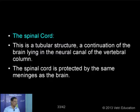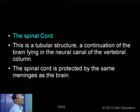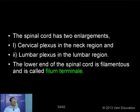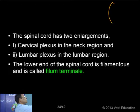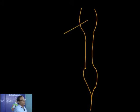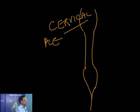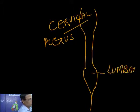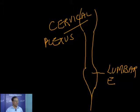The spinal cord is protected by the same membranes called the meninges, just like the meninges of the brain. The spinal cord shows two enlargements: one in the neck region called the cervical enlargement or cervical flexure, and another one in the abdominal region called the lumbar enlargement or lumbar flexure. So the spinal cord exhibits two enlargements — one cervical enlargement in the neck region and one lumbar enlargement in the lumbar region.